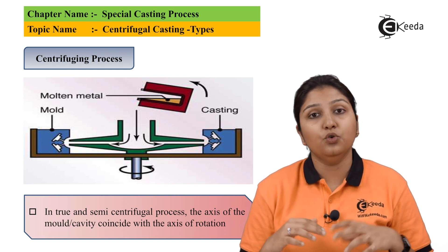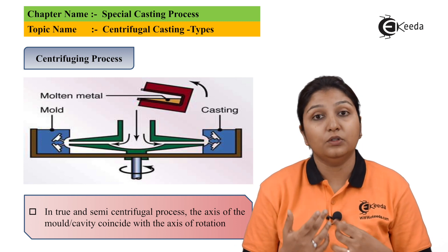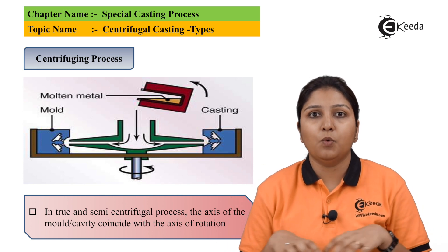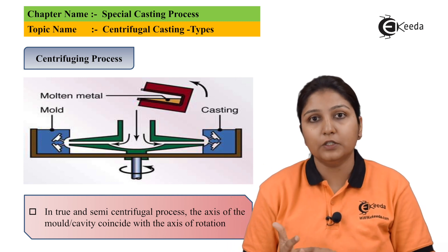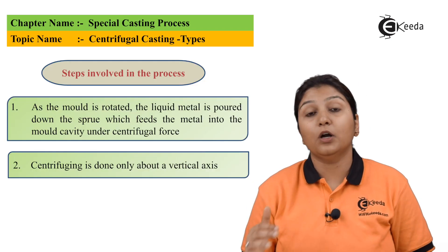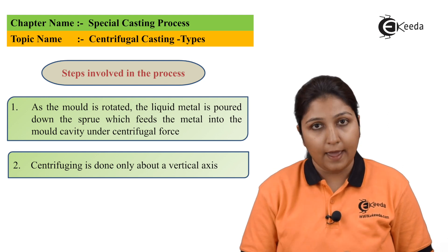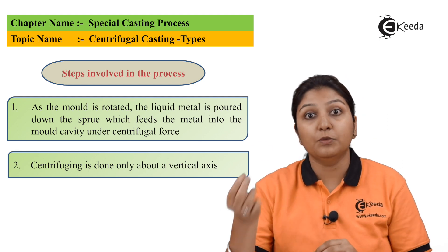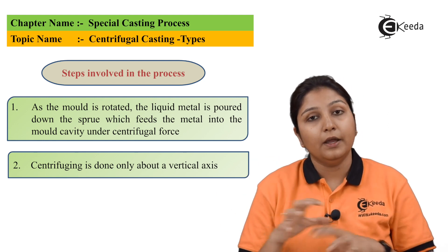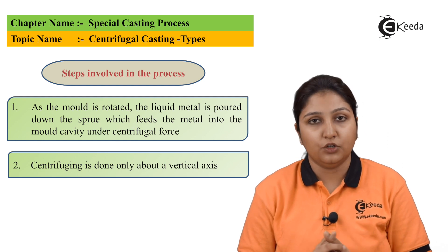In centrifuge casting, the basic difference is you have different mold cavities other than your rotating cavity, so that the material comes and fills different small gates. This is the difference between centrifuge casting and semi-centrifugal casting. The mold has molten metal which has been poured by your pouring basin and your sprue. Liquid metal comes and occupies the different gates, and your centrifugal action takes place.